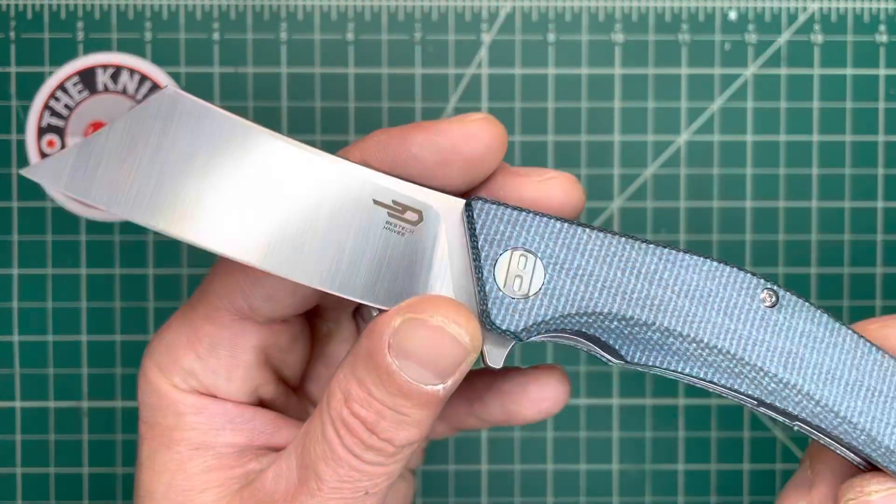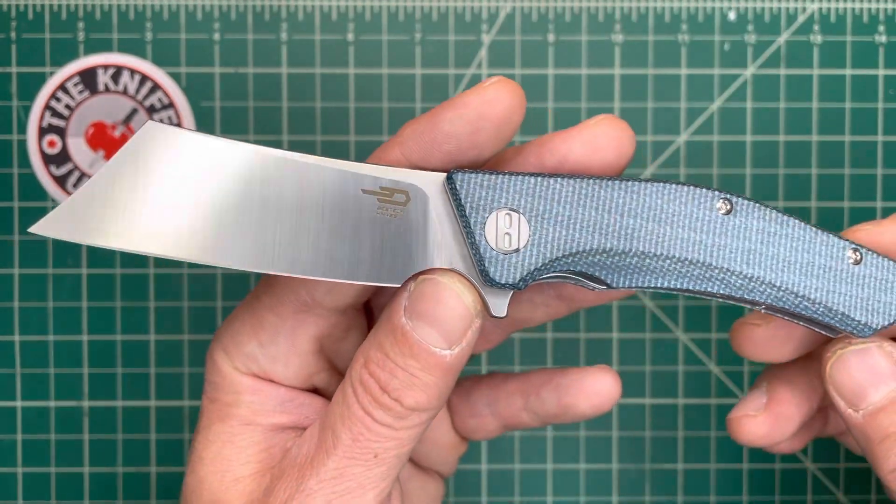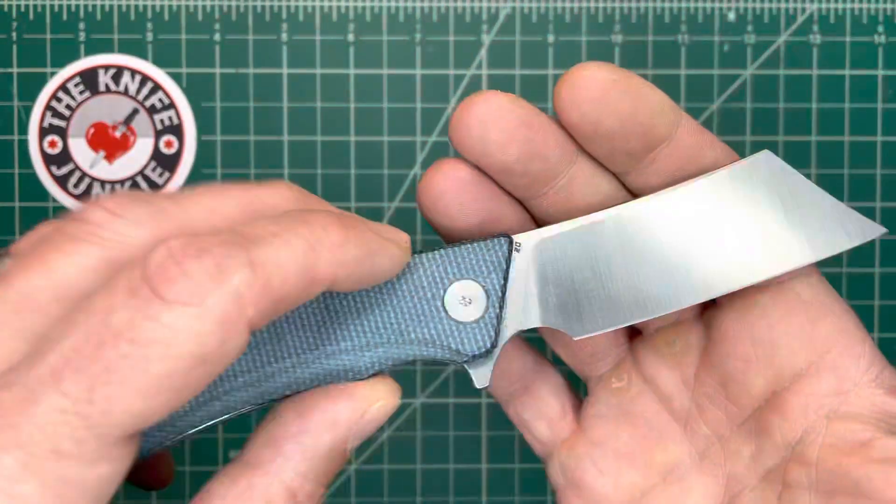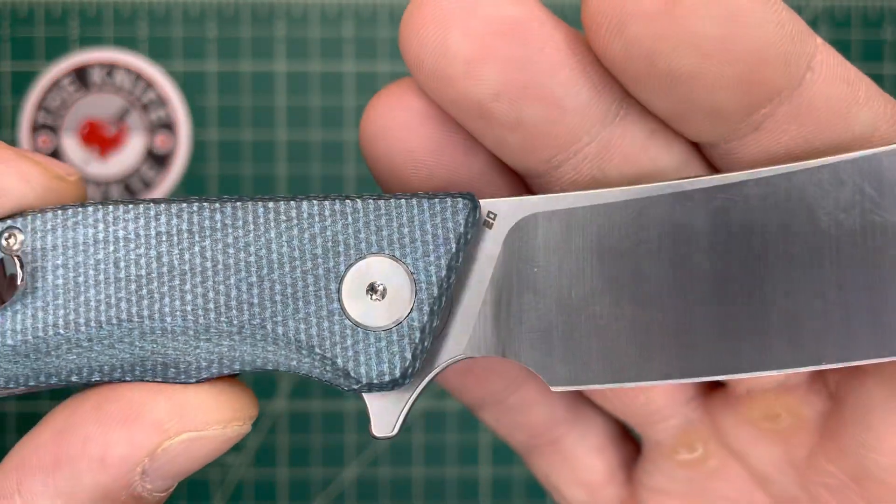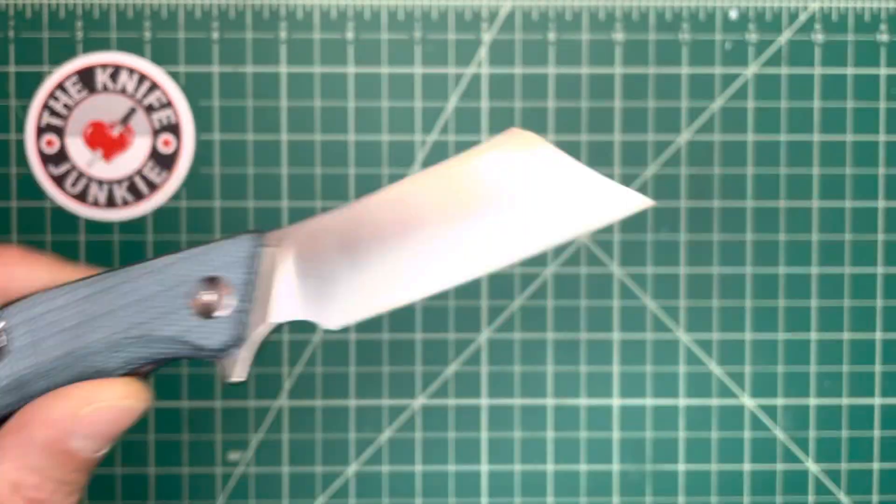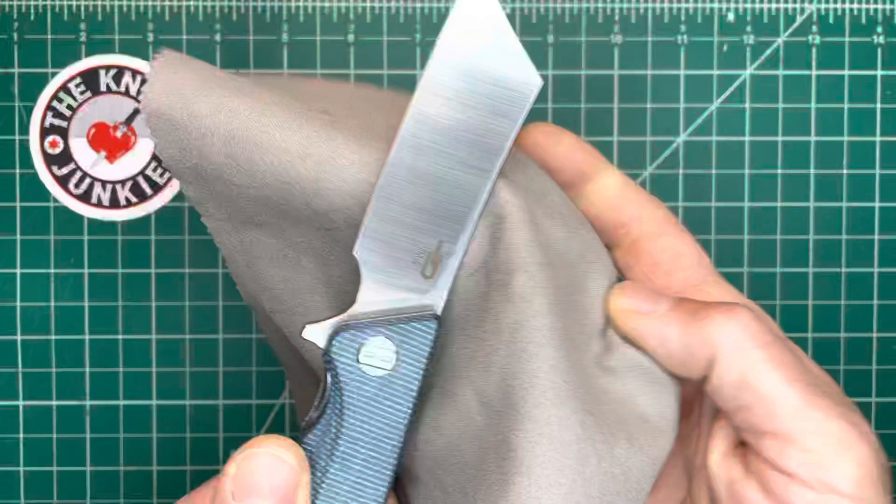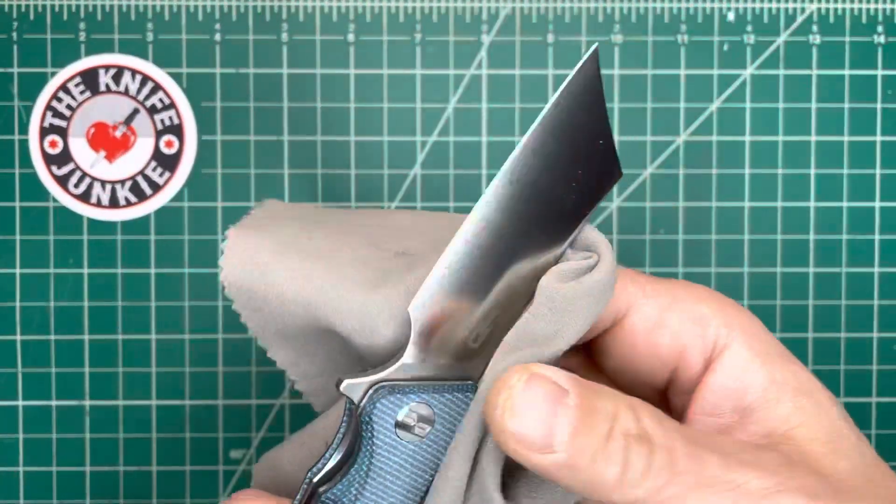So the Cubis is a cleaver-shaped blade. This is in the more budget arena for Bestech. This is a D2 blade, and Bestech, man, they have their finger in everything.